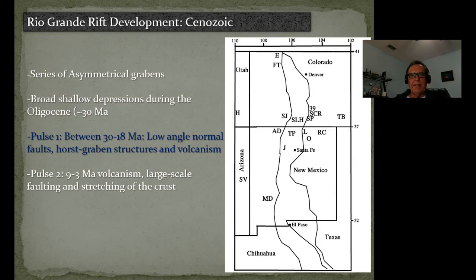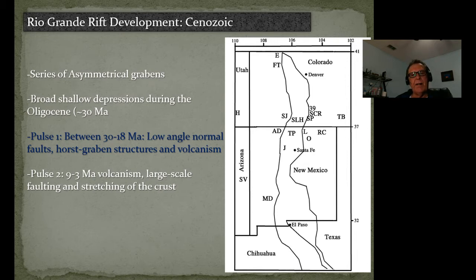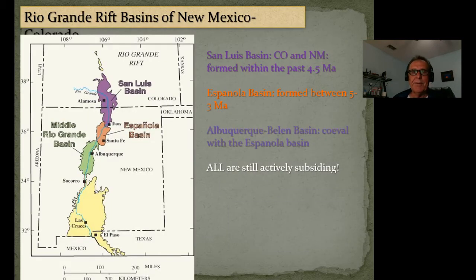The Rio Grande Rift itself is a series of asymmetric grabens. Graben is a German word meaning 'grave' — a down-dropped block — and horst means uplifted. So you have uplifted blocks and down-dropped blocks. The rift began about 30 million years ago as the crust began to extend, with associated volcanism, low-angle normal faulting, formation of horst and graben structures. Then a second pulse, much more recent, between about 9 to 2.5 million years ago, included much more voluminous volcanism, large-scale faulting, and stretching of the crust. It then kind of stopped, though there is still active faulting and relatively young volcanism.